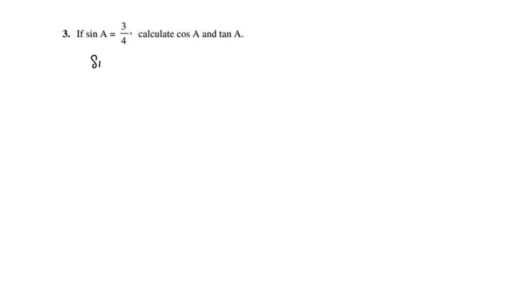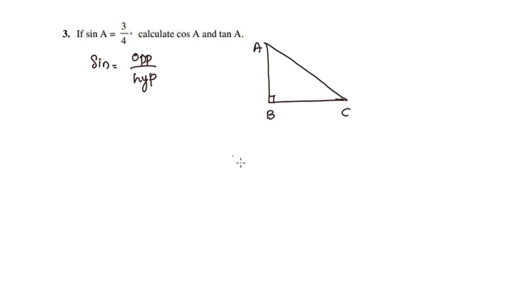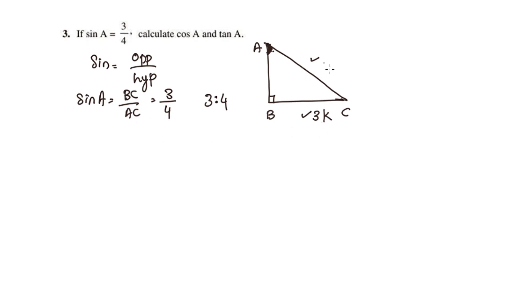This is the triangle A, B, C, right-angled at B. Sin A is equal to BC by AC.